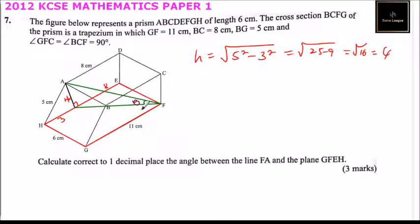So if that height is 4, then we can use it now to find the other side. This side is 4, and here we have 8. This side is 5, this side is 6.